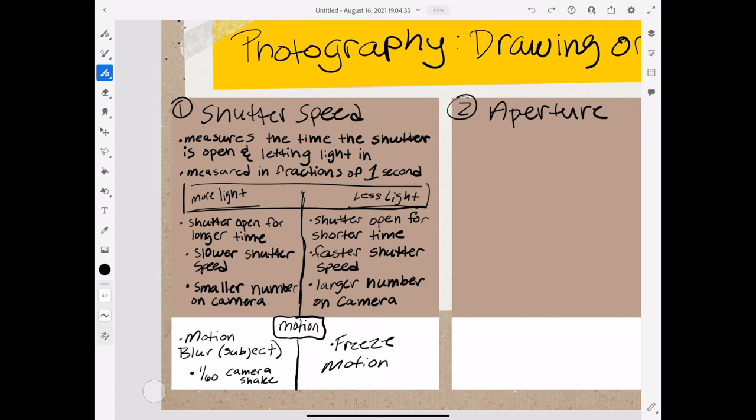While you're letting more light in, you're also allowing for motion blur from the subject. Once you go slower than 1/60th of a second, you'll begin to get camera shake. When you let less light in, you leave the shutter open for a shorter amount of time.